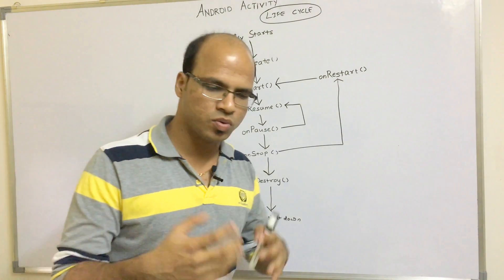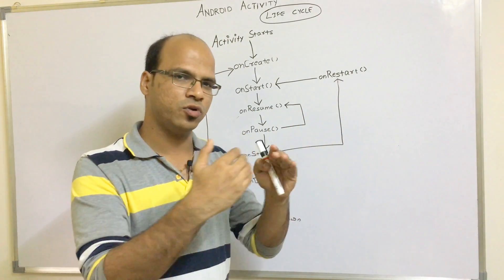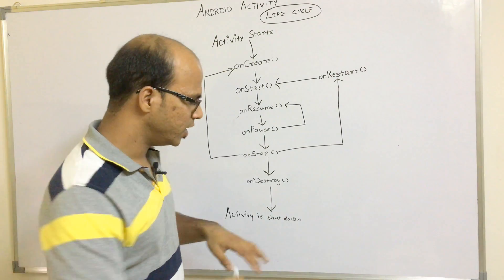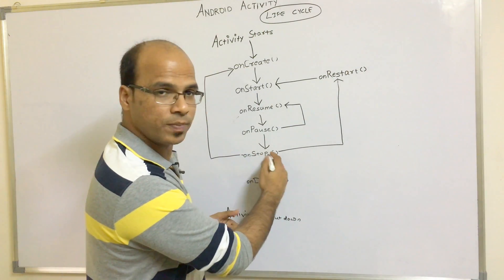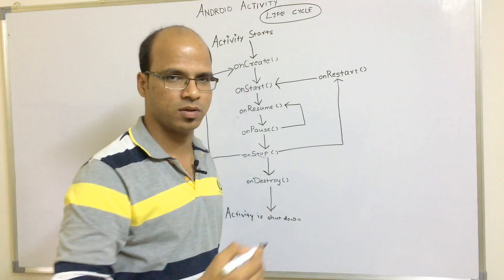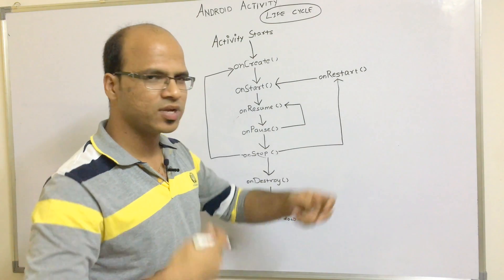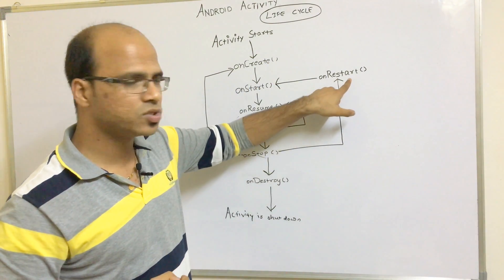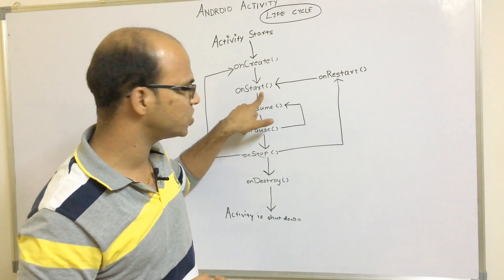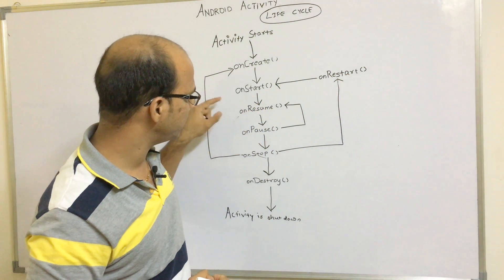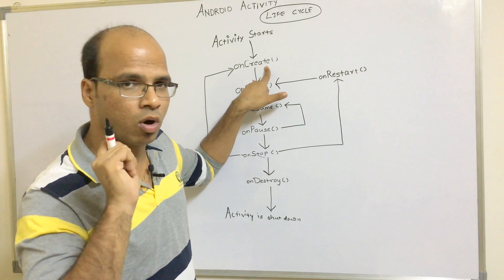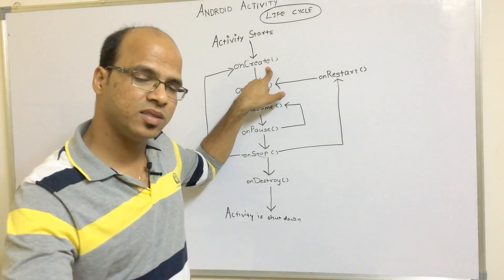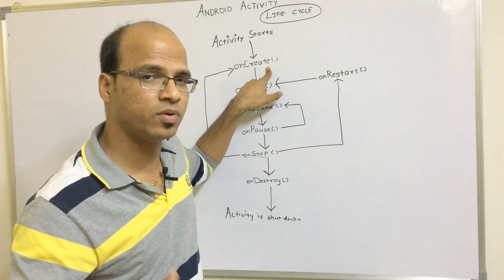Now let's say you're done with your work, you've taken the picture, and you want to go back to the activity you were using. As soon as you go back, from onStop it will call the onRestart method. Your activity will go back to the main screen. Then it calls onStart and then onResume. You don't have to go to onCreate again because your activity was already in memory.